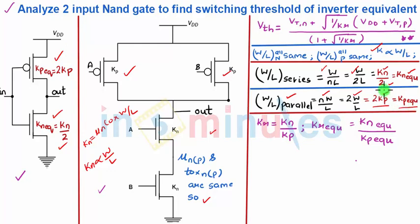Now we have to find the switching threshold for an inverter equivalent. In the previous clip we have also derived the switching threshold value for a CMOS inverter which is given by switching threshold equal to threshold voltage of NMOS plus square root of 1 by Kr where Kr is Kn by Kp into Vdd plus Vtp the whole divided by 1 plus square root of 1 by Kr.